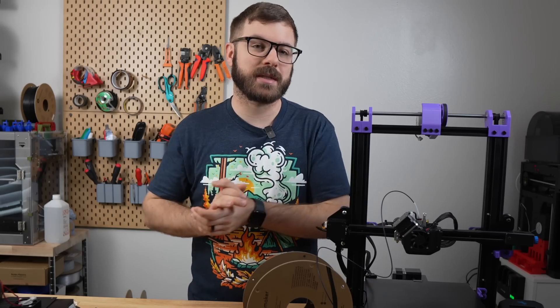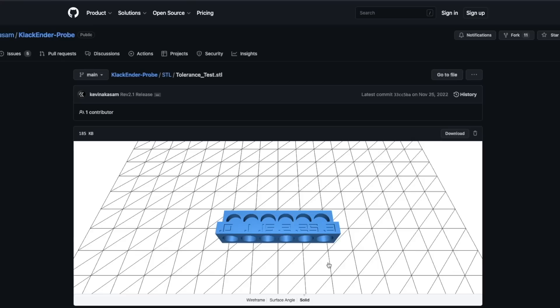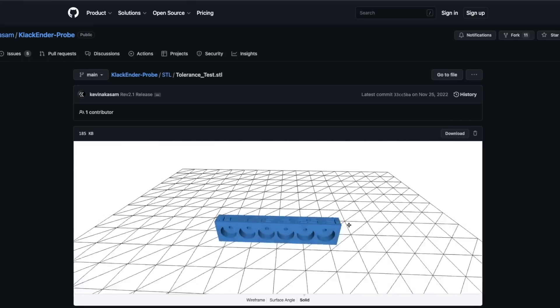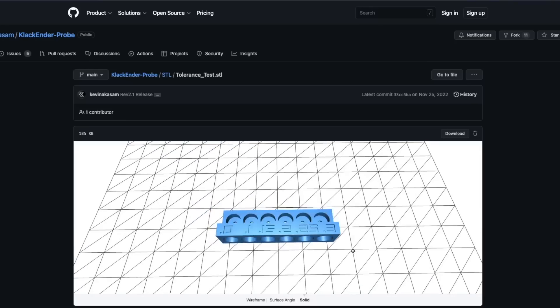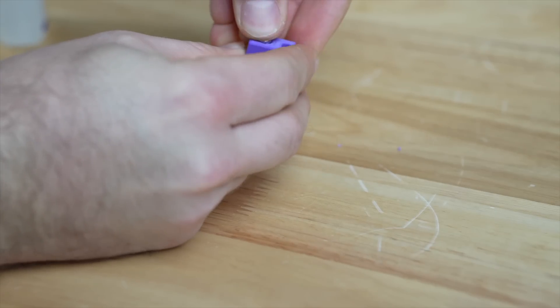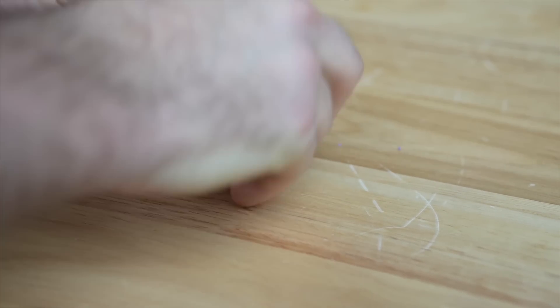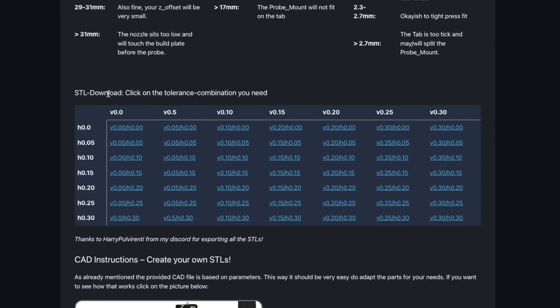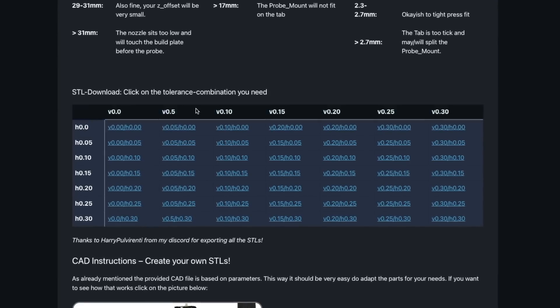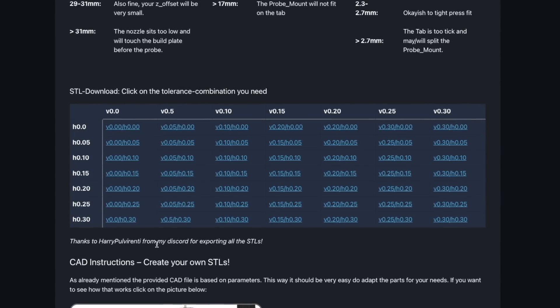The Clack Ender does have a tolerance test that you'll want to print out before printing out any of the rest of the parts. This is basically just a vertical and horizontal magnet check to make sure that with the shrinkage of your printer and your tolerances that you are able to get those magnets in without breaking the part, and it will also let you know if you need to print out any of the scaled up versions of the parts that are available also in the GitHub.